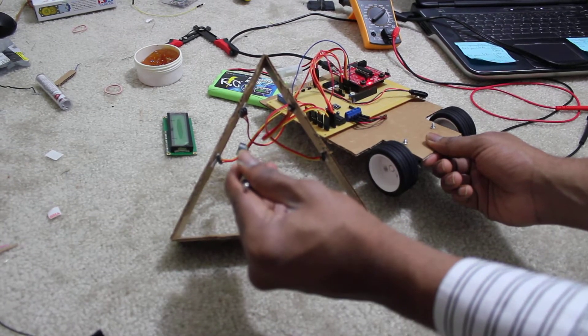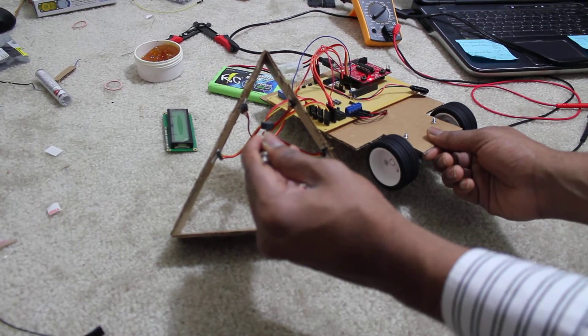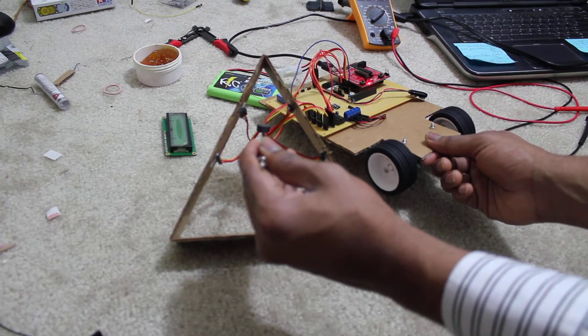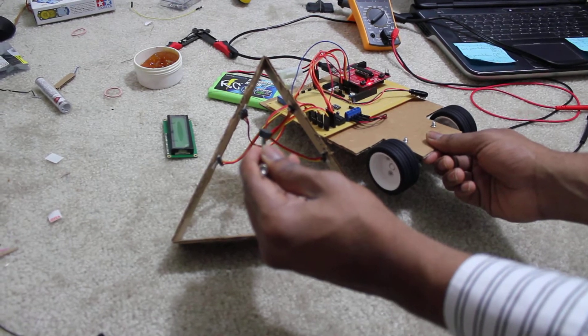Again I am increasing the speed. This is just the vehicle running at constant speed. So this is the max speed that we can achieve because we are running the motors just with a 5V supply. And I am decreasing the speed.